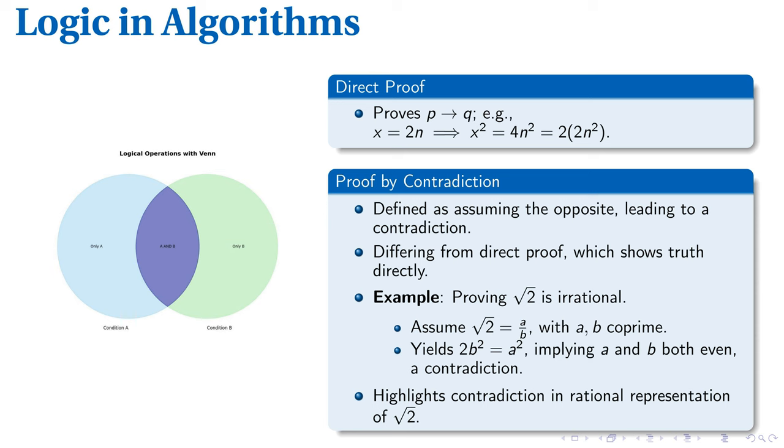Contrastingly, proof by contradiction applies an assumptive tactic. Assuming the contrary, it unveils a contradiction. Imagine we seek to prove that the square root of 2 is irrational. We start by assuming the opposite, that the square root of 2 is rational and representable as a fraction of coprime integers a over b. However, calculations lead us to conclude that both integers are even, a contradiction. Thus, we infer that the square root of 2 is indeed irrational.